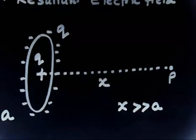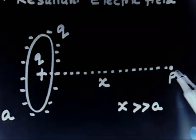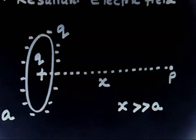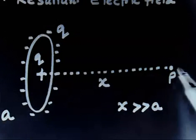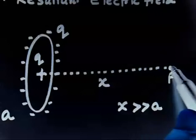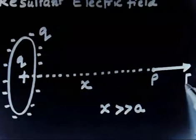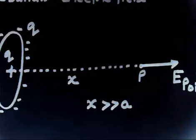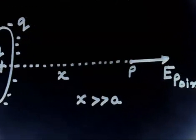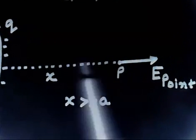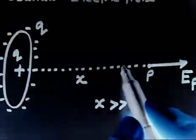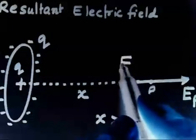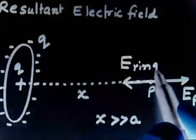This means we have to do some approximation. We need to find the electric field at that point due to the point charge and due to the ring, using the superposition principle. The electric field due to the positive point charge will point away (outward along the axis), while the electric field due to the negatively charged ring will attract a positive test charge, so it points inward — in the opposite direction.